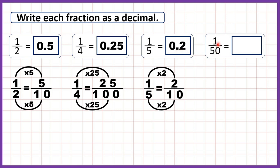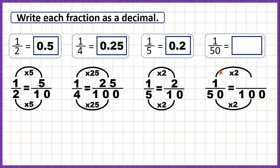Finally we have one fiftieth. One hundred is a multiple of fifty because fifty times two is one hundred, so one times two is two. Because one fiftieth is equivalent to two hundredths, we write that as 0.02, since the second digit after the decimal point is the hundredths digit.